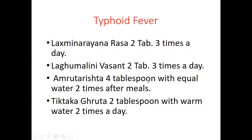Now, three important Ayurvedic prescriptions. First prescription for typhoid fever: Lakshminarayan Ras, two tablets three times a day, plus Laghu Malini Vasanta, two tablets three times a day, with Amruta Arishta — that is Guduchi/Giloy — four teaspoons with equal amount of water twice after meals, and Tiktaka Ghrita (medicated ghee) two teaspoons with warm water twice a day.